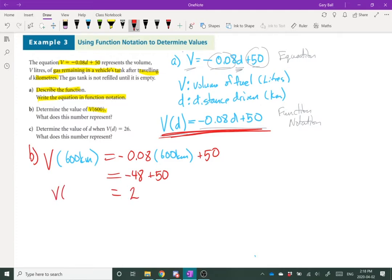So what it's saying, V of 600 kilometers, if I have traveled 600 kilometers, according to this function, I should have 2 liters of gas left. That's what it's figuring out.